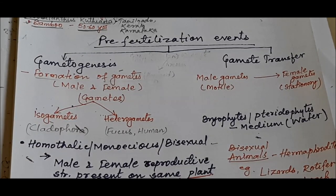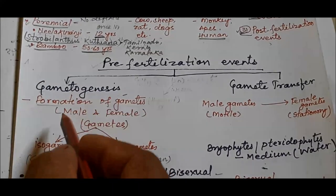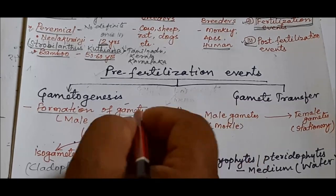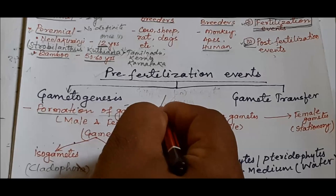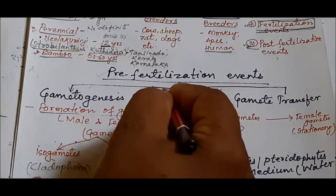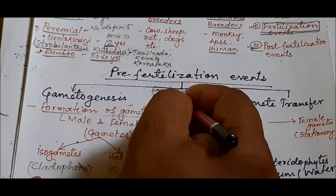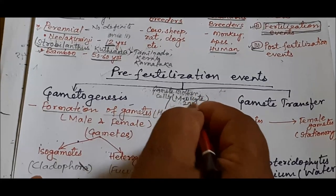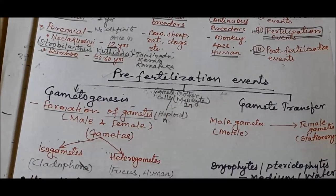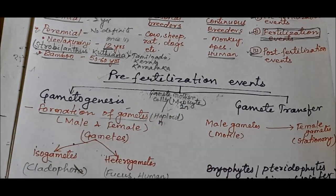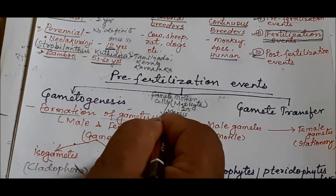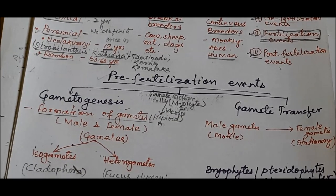In pre-fertilization events, two processes take place. The first is gametogenesis — the process of formation of gametes. Gametes are haploid in nature, meaning they contain only one set of chromosomes. The cells that produce gametes are called gamete mother cells, also known as meiocytes. Meiocytes are always diploid, and since diploid cells must become haploid, reductional division — meiosis — takes place to form haploid gametes.